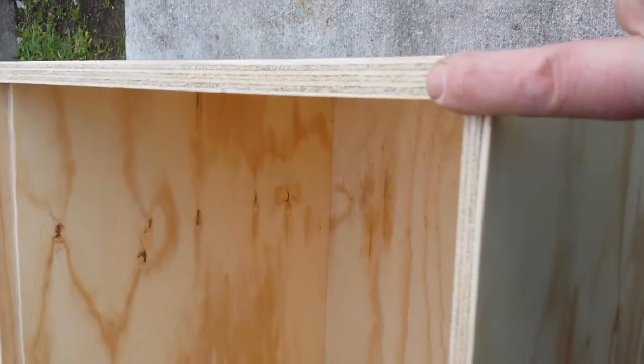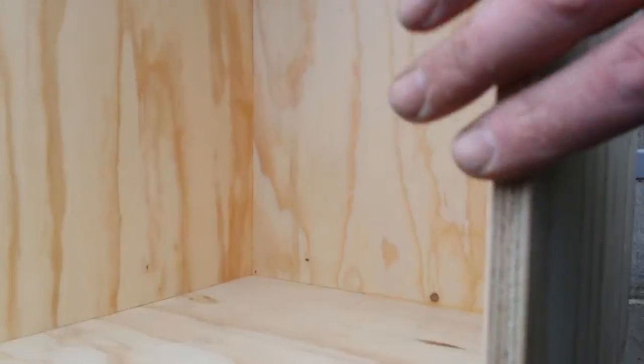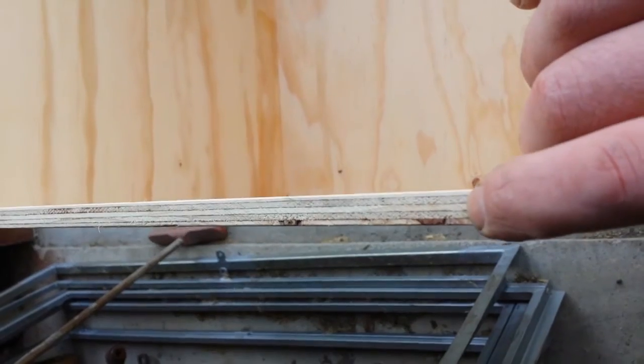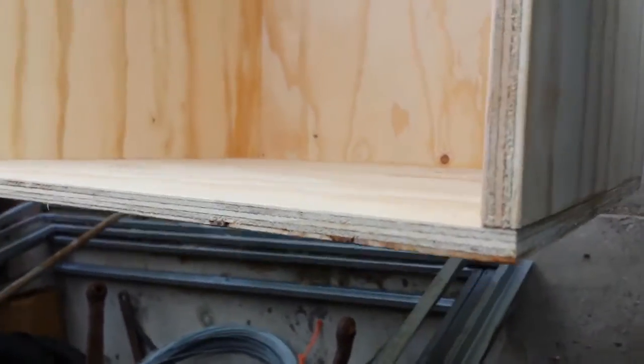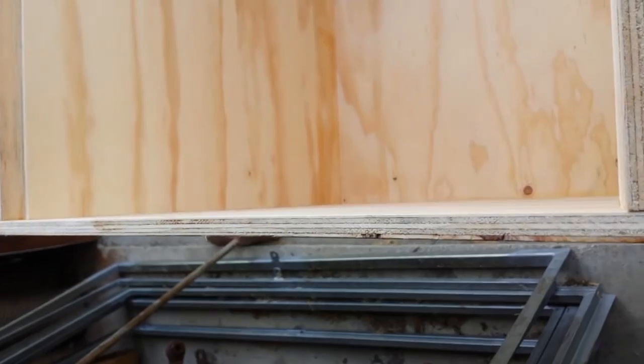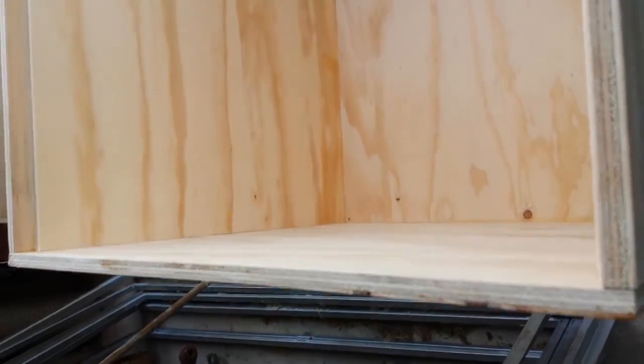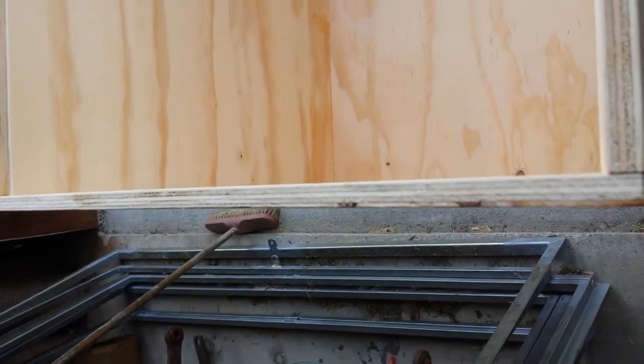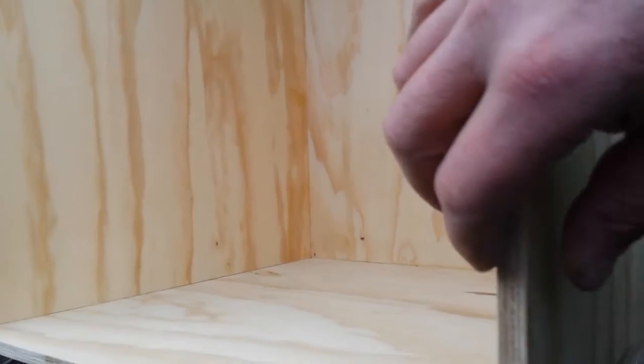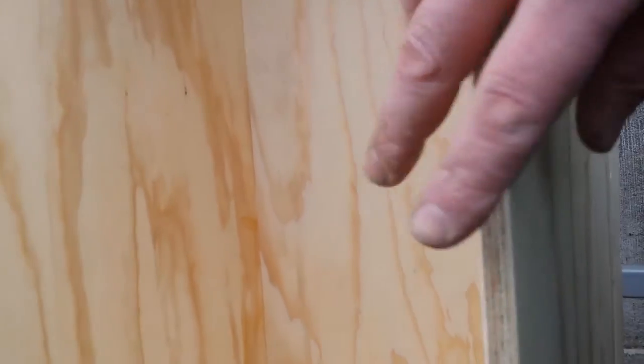You'll notice that on these boxes, one end is 18 mil and the sides are 18 mil, but the end is 12 mil. The reason I did that was one, to try to keep as much weight out of them as possible. The other is that I could make two boxes perfectly out of two sheet of ply, one 18 mil and one 12 mil.